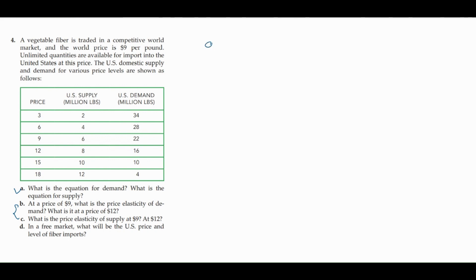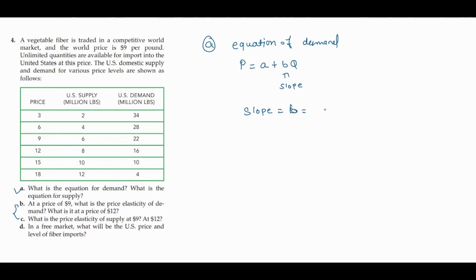So let me write the equation of demand. Let's suppose p equals to a plus b·q, where b is the slope of this equation and a is the intercept. To find the slope, you can use this formula: change in price divided by change in quantity. You can use any two data set points to find the equation of demand. I'm going to use the first and second ones — you can use any two.